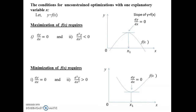Let us discuss how optimization technique is used in economics. Let us assume a function y = f(x). Maximization of y = f(x) requires two conditions. The necessary condition is dy/dx = 0, also known as the first order condition. The sufficient condition is d²y/dx² < 0, also known as the second order condition. Looking at the graph of y = f(x), we want to find the maximum point on the curve.